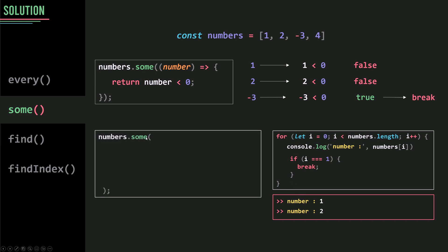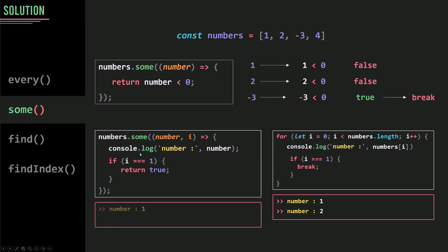To achieve the same result using some, I'll pass a callback function with number and the index, console log the number, and use an if statement — returning true so some can stop iterating. On the first iteration i is 0, number is 1, condition not satisfied, nothing returned so undefined is returned — undefined is false — so it goes to the next one. On the next iteration index is 1, number is 2, condition evaluates to true, we return true — and some stops. That's how you can use break inside the some method.